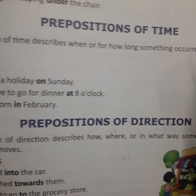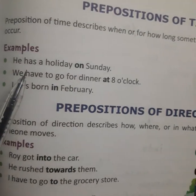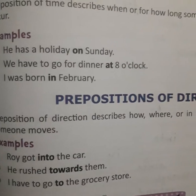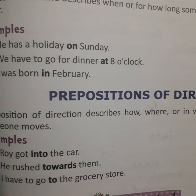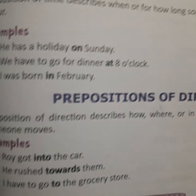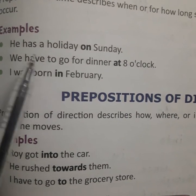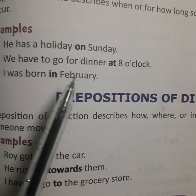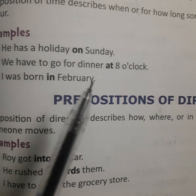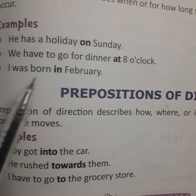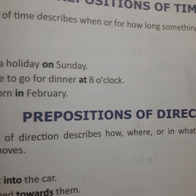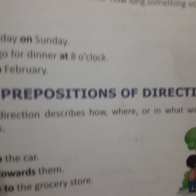Next is prepositions of time. Prepositions of time describes when or how long something occurred or will occur. Prepositions of time हमें बताता है कि कोई चीज कितने time के लिए हुई है और आगे कितने time के लिए होगी. For example: 'He has a holiday on Sunday.' 'We have to go for dinner at 8 o'clock.' 'I was born in February.' So, this is telling us about time — that is called preposition of time.